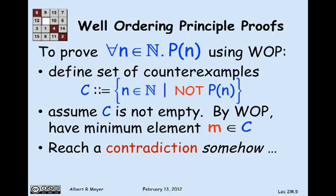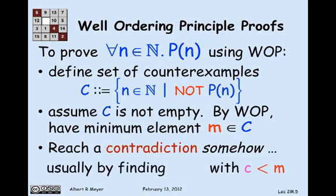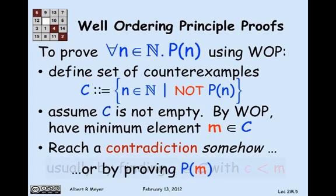But the usual organization of the contradiction is one of two kinds. You find a counterexample that's smaller than m. You find a c that's in the set of counterexamples, and c is less than m. That would be a contradiction, because m is the smallest thing in c. Or you reach a contradiction by proving that p does hold for m, which means it's not a counterexample. And those are kind of the two standard ways to organize a well-ordering proof.